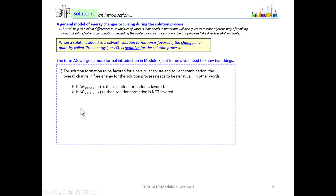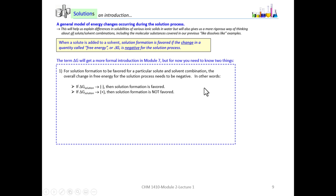In other words, if delta G of solution is negative, then solution formation is favored. If delta G of solution is positive, then solution formation is not favored. When we say delta G of solution, we mean the overall change in free energy for the solution process as a whole — solute plus solvent forming a solution or not.